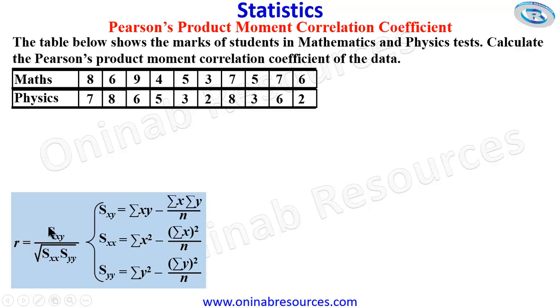This is R equal to S_XY over root S_XX times S_YY, where S_XY is summation of XY minus summation of X times summation of Y over N. N is the number of observations.